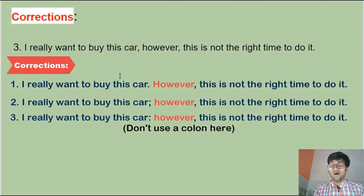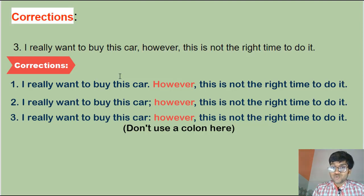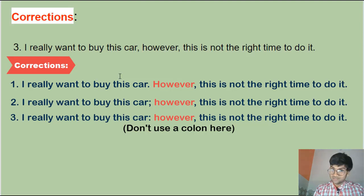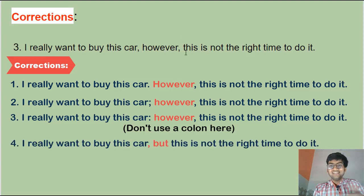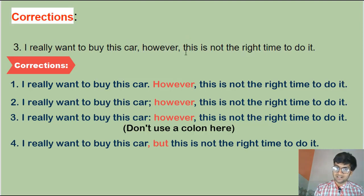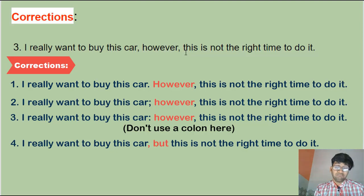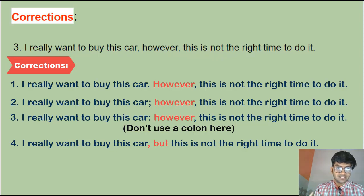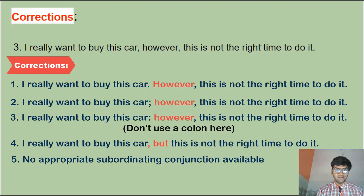Method three — a colon: it doesn't make sense to use a colon here, so we cannot use it. Method four — a coordinating conjunction: 'I really want to buy this car, but this is not the right time to do it.' We can use 'but' as the coordinating conjunction. For method five — a subordinating conjunction — I cannot think of one that fits here, so we'll leave that.